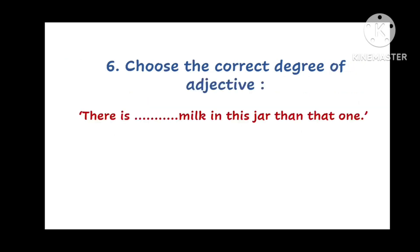Question 6. Choose the correct degree of adjective. There is dash milk in this jar then that one. And the options are A. Less milk. B. Little milk. C. Few milk. Or D. Some milk.